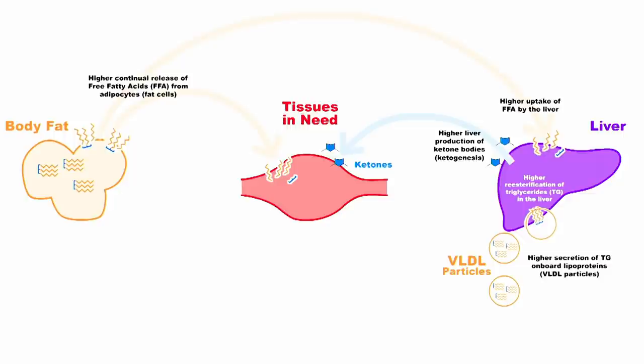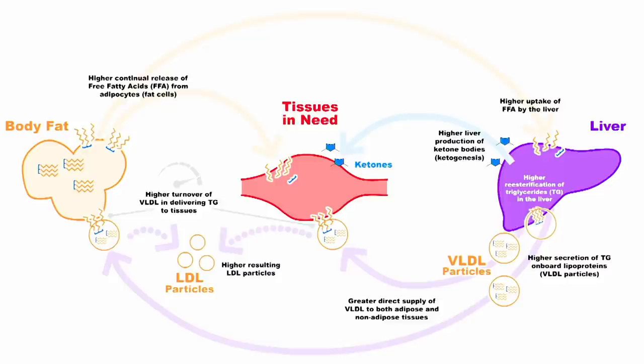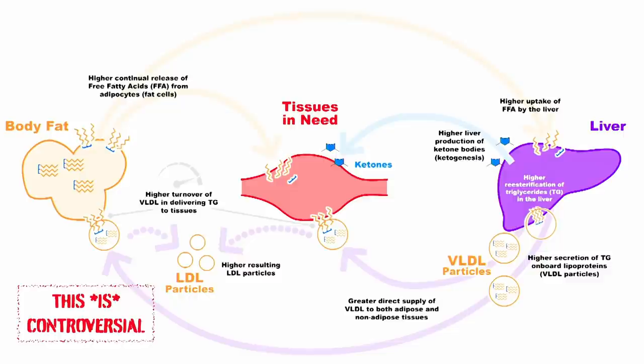None of this is really that controversial — this is pretty much keto 101. Where it does get a little more controversial is the second part: we propose there's higher re-esterification of these fatty acids into triglycerides, and that allows for higher secretion of these triglycerides on board lipoproteins as VLDL. This allows for greater direct supply of VLDL to both adipose and non-adipose tissue. And here's the money shot: we also propose there's a higher turnover of VLDL in delivering these triglycerides, which is why you actually see lower triglycerides in spite of higher triglyceride secretion, and thus higher resulting LDL particles. This part, however, is controversial, and it's where a lot of my focus with this research has come into play.